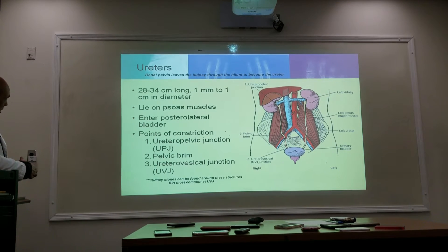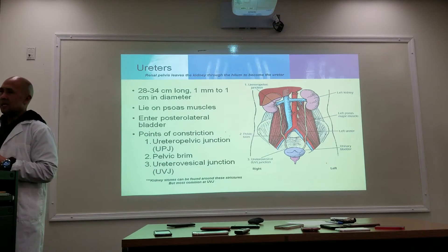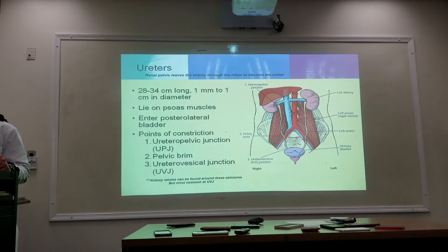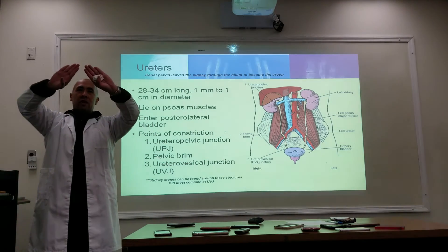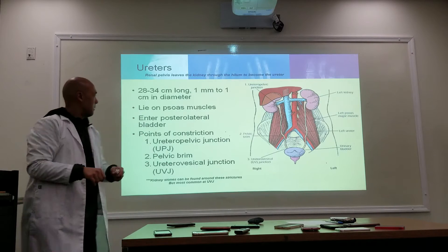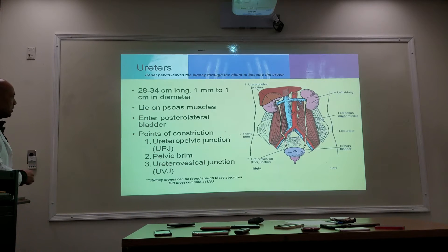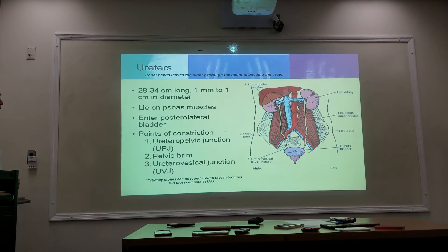The renal pelvis leaves the kidneys through the hilum to become the ureter. Ureters are anywhere between 20 to 34 centimeters in length and one millimeter to one centimeter in diameter. They lie right on top of the psoas muscles, which causes the 20-degree angulation and 30-degree obliquity. They leave the kidneys anteriorly and enter the posterolateral area of the bladder.